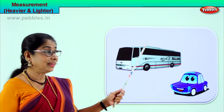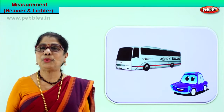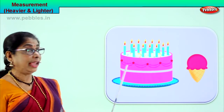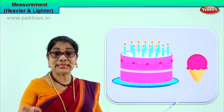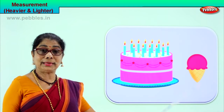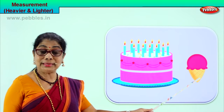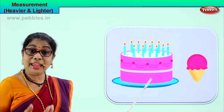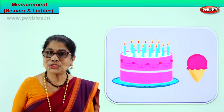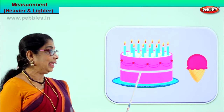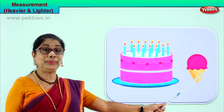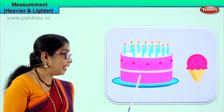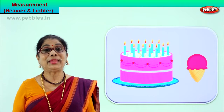Lighter, heavier. Now can you understand? Let's look at our next picture. You have a huge birthday cake and also a tiny strawberry cone ice cream. If you weigh them on a weighing machine, certainly the cone ice cream is lighter than the cake, or the birthday cake is heavier than the strawberry cone ice cream.